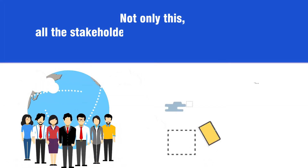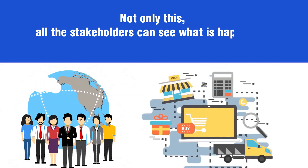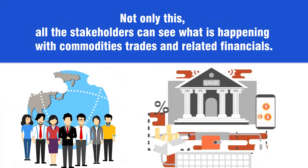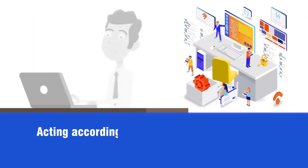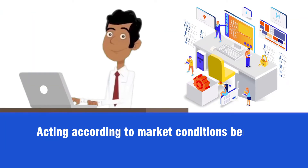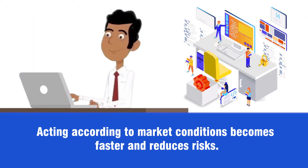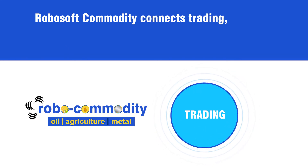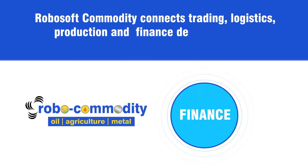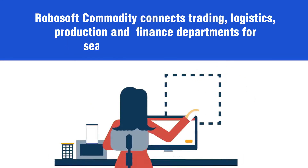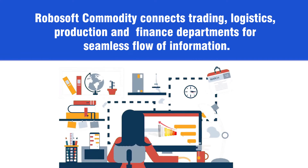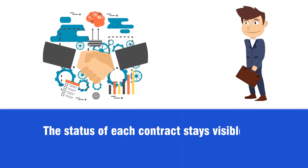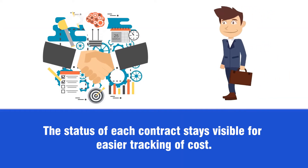Not only this, all stakeholders can see what is happening with commodity trades and related financials. Acting according to market conditions becomes faster and reduces risks. RoboSoft Commodity connects trading, logistics, production, and financial departments for a seamless flow of information. The status of each contract stays visible for easier tracking of cost.